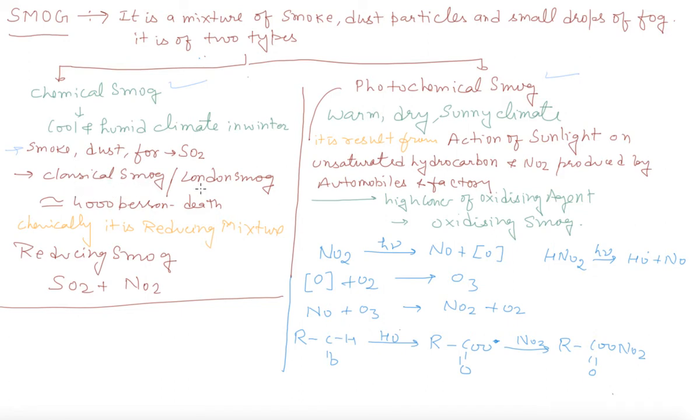It is called classical smog or London smog. It is generally a reducing mixture, so it is called reducing smog. It contains SO2, sulfur with oxygen, then water giving H2SO4, and NO2. Due to this, in Los Angeles in 1952, approximately 4000 persons got death in London.